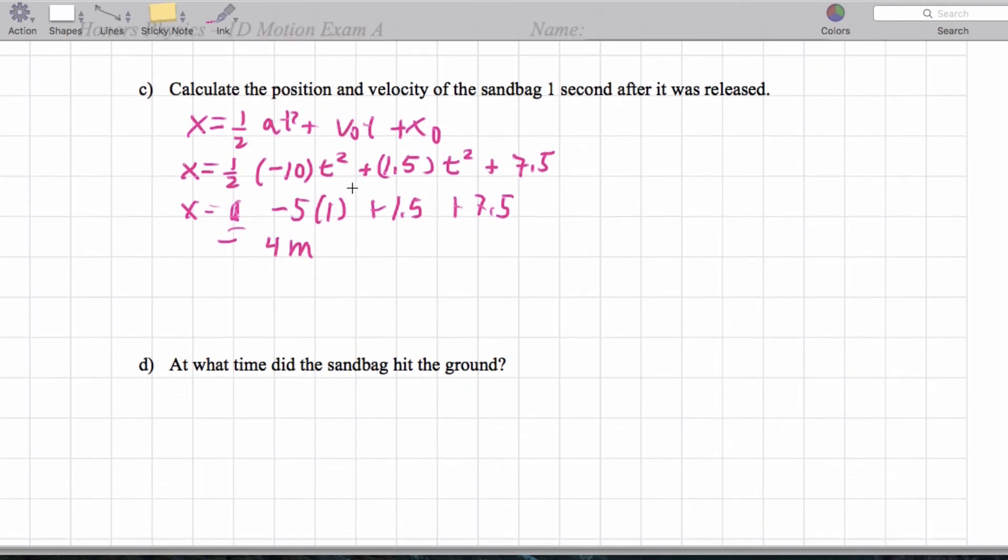Now we want to know at what time did the sandbag hit the ground. So we have, it hits the ground when the final position is 0. So we can say 0 equals negative 5 t squared plus 1.5 t. By the way, I had this wrong. It should just be plain old t, not t squared. Plus 7.5.